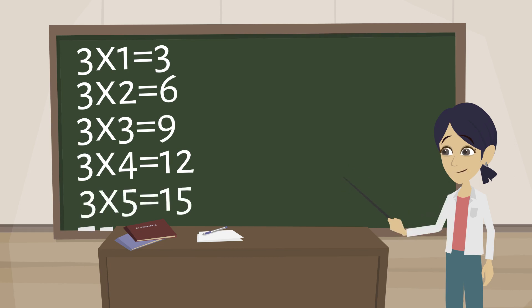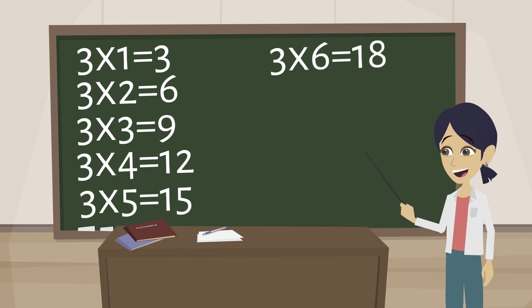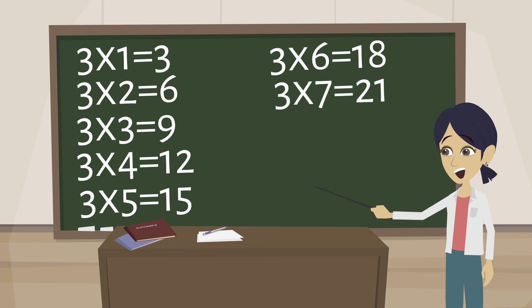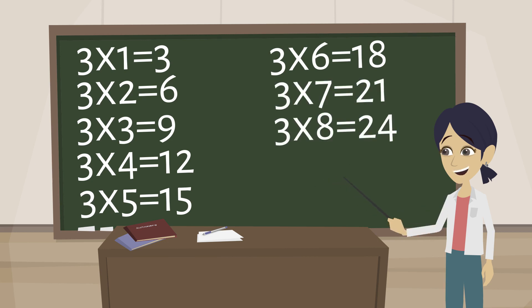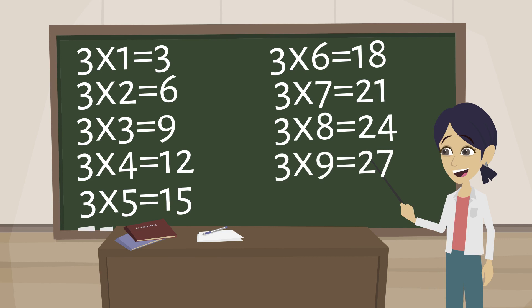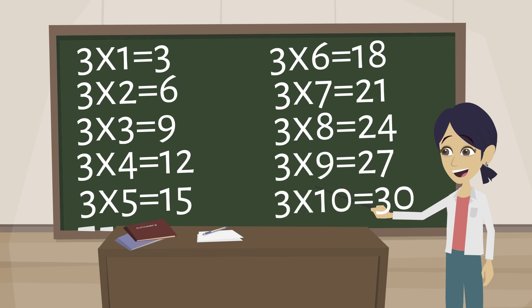3 5s are 15, 3 6s are 18, 3 7s are 21, 3 8s are 24, 3 9s are 27, 3 10s are 30.